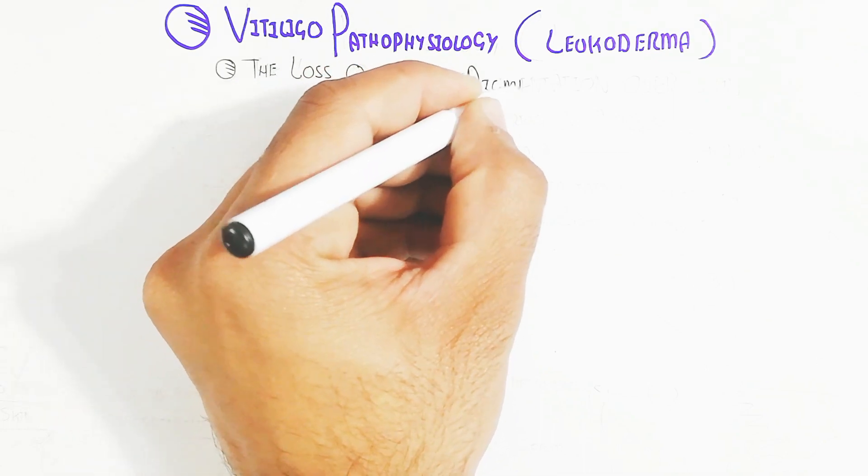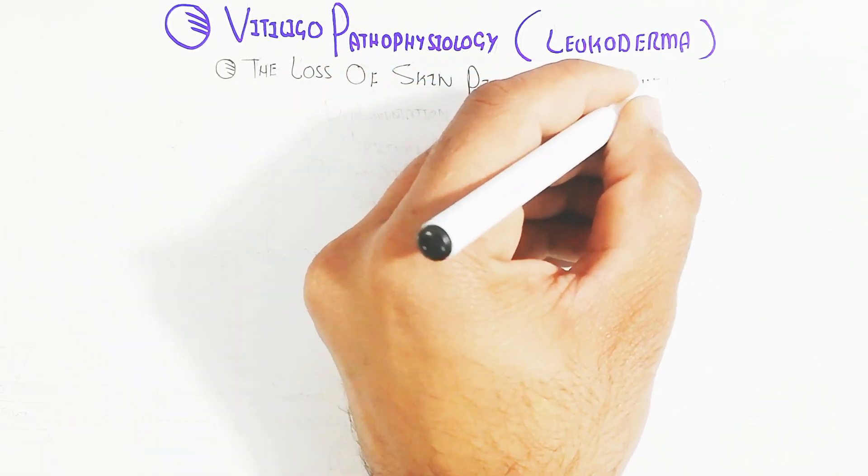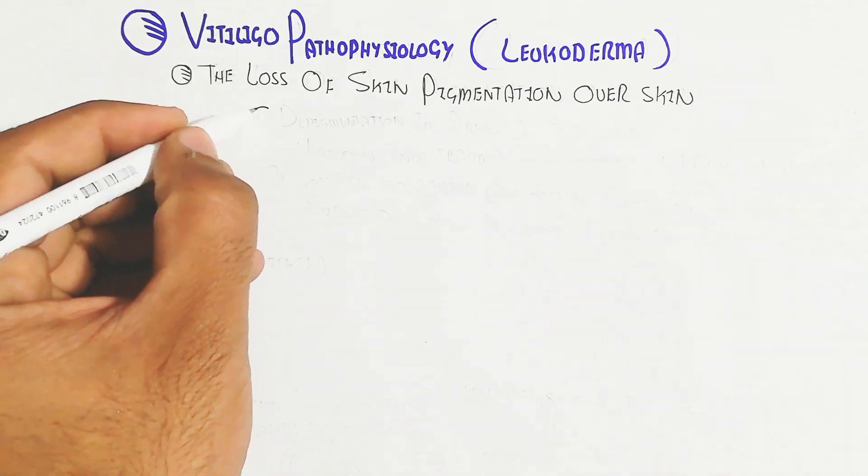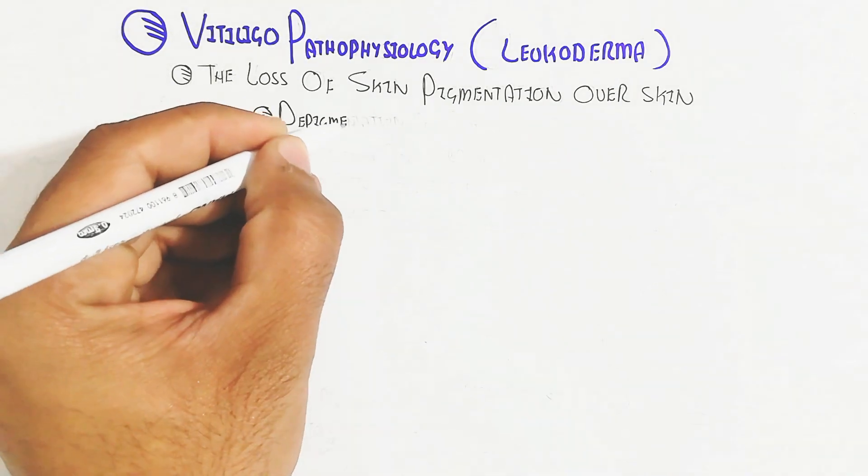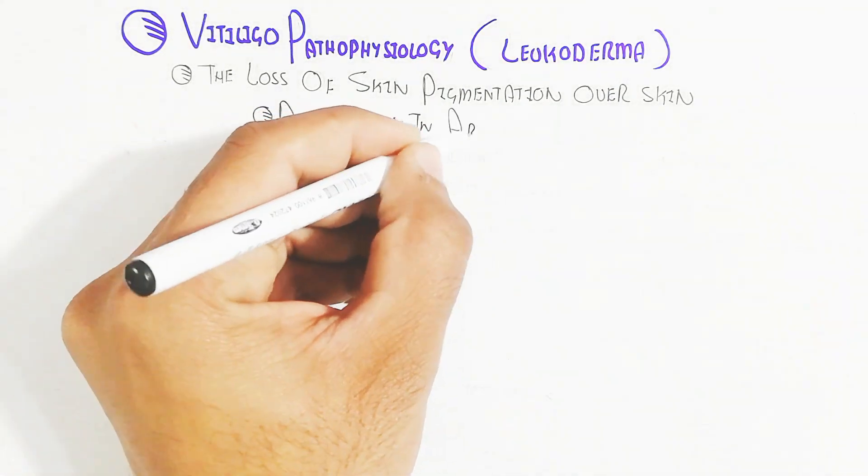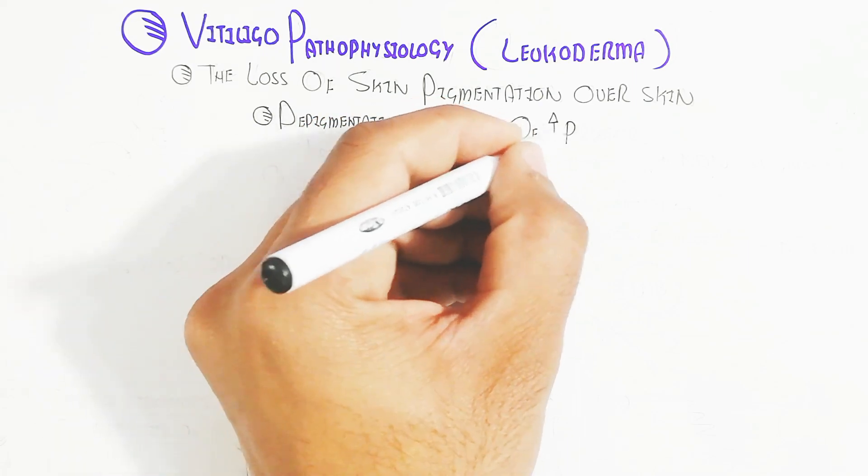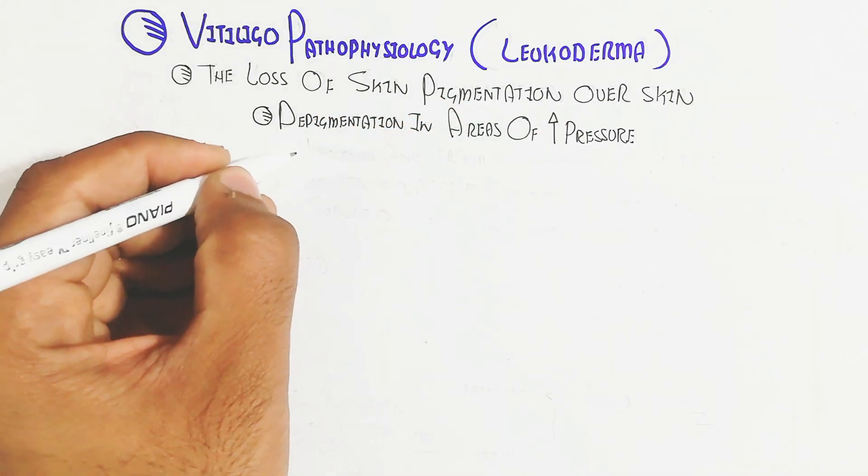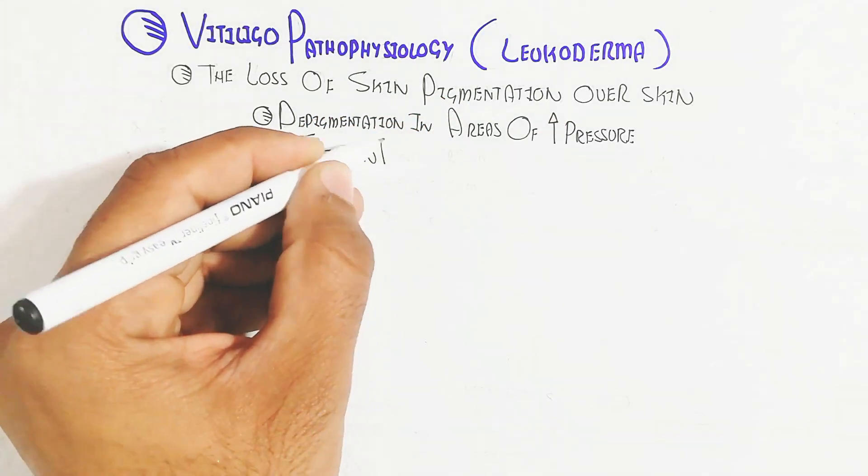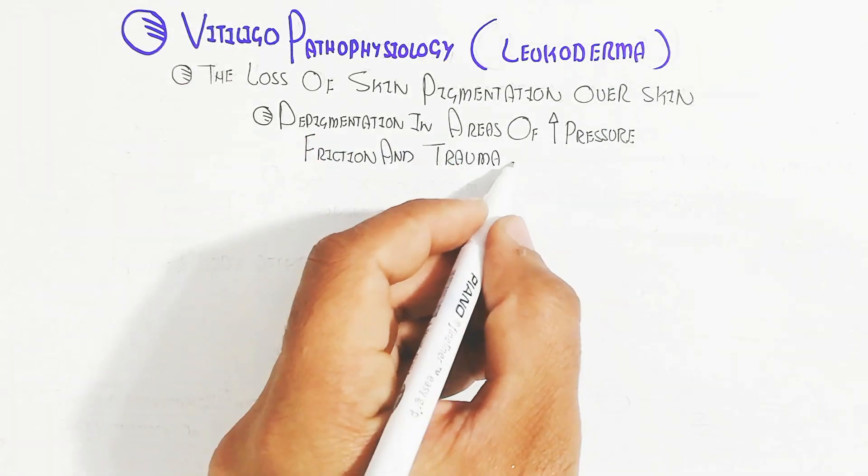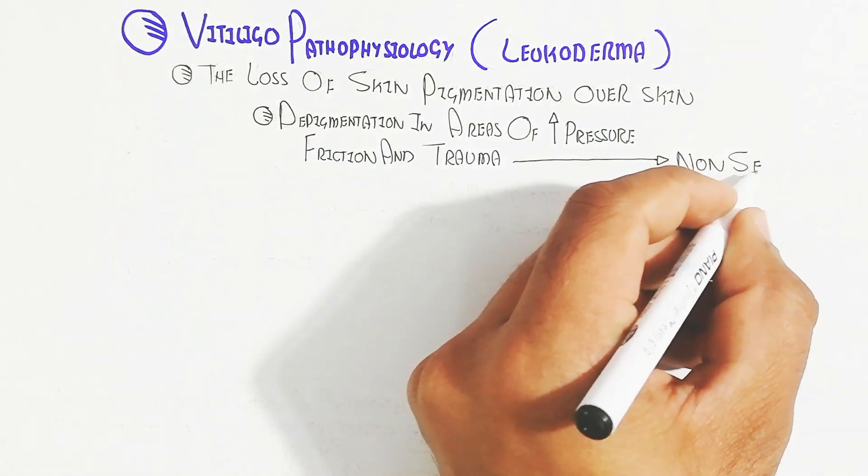The melanin pigment is produced from melanocytes and deposited into keratinocytes. The keratin-containing protein leads to pigmentation in areas, so the loss of skin pigmentation or depigmentation occurs in areas of increased pressure, friction, and trauma.